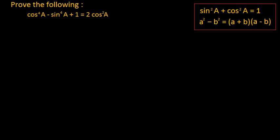So here we have our first problem where we have to prove cos to the power 4a minus sin to the power 4a plus 1 is equal to 2 times cos square a. The formulas we are going to use are: sin square a plus cos square a equals 1, and a square minus b square equals a plus b multiplied by a minus b.